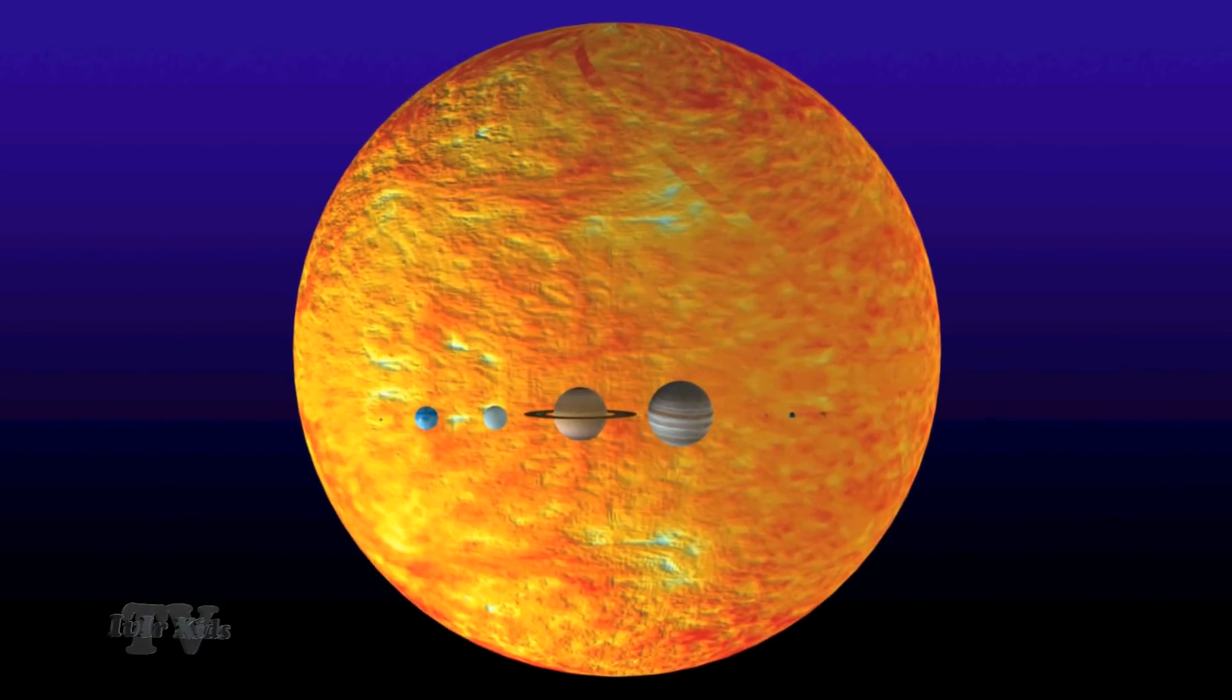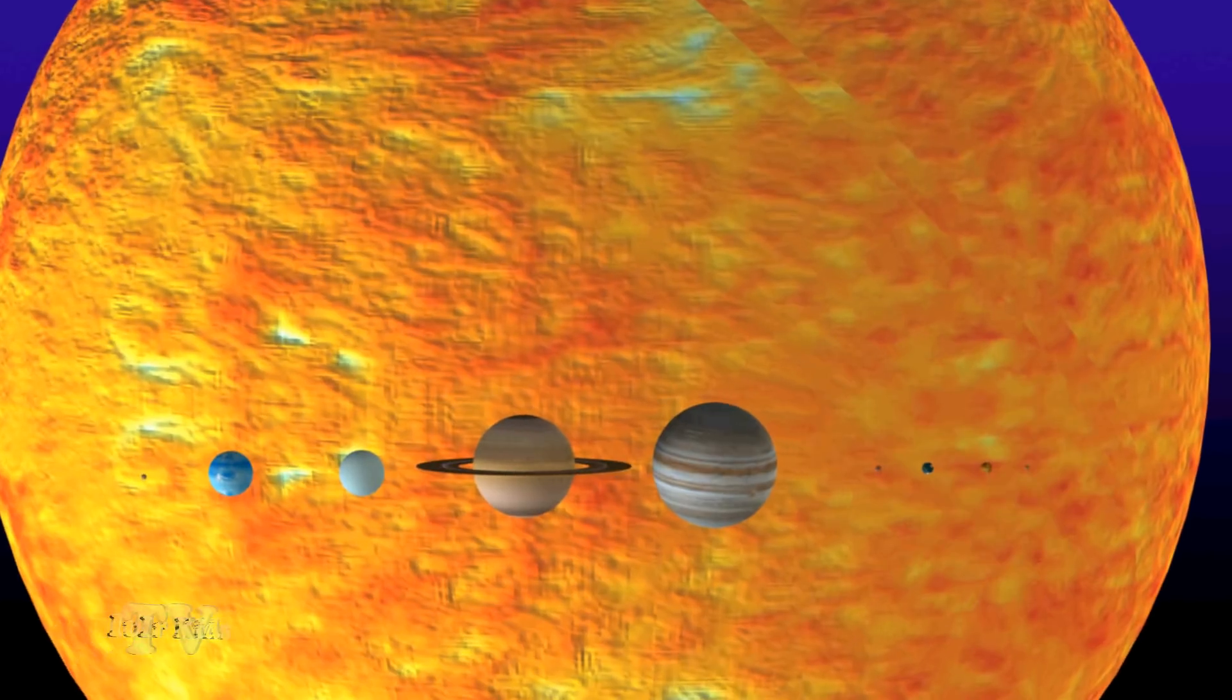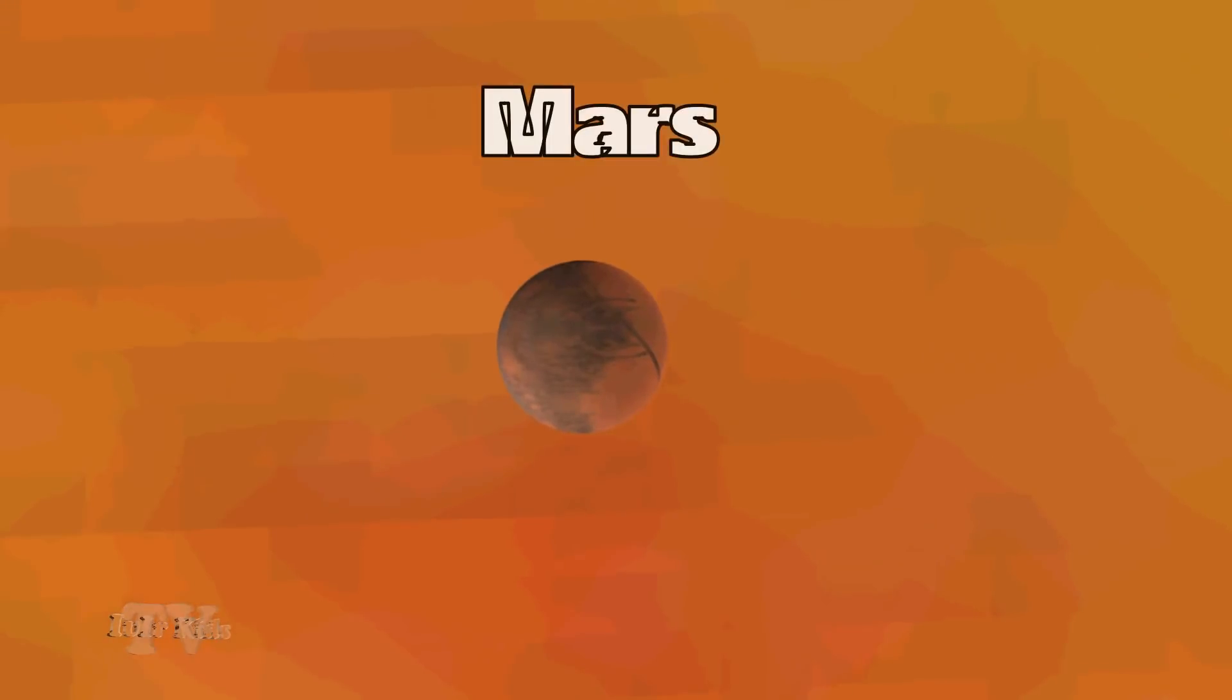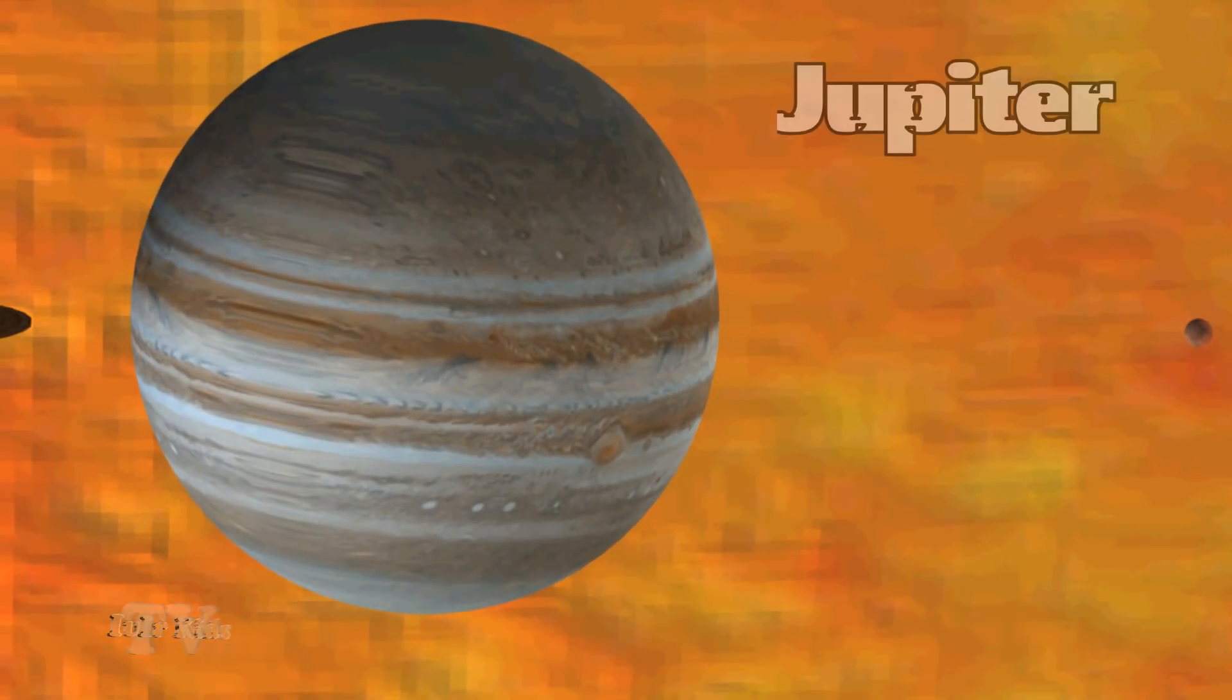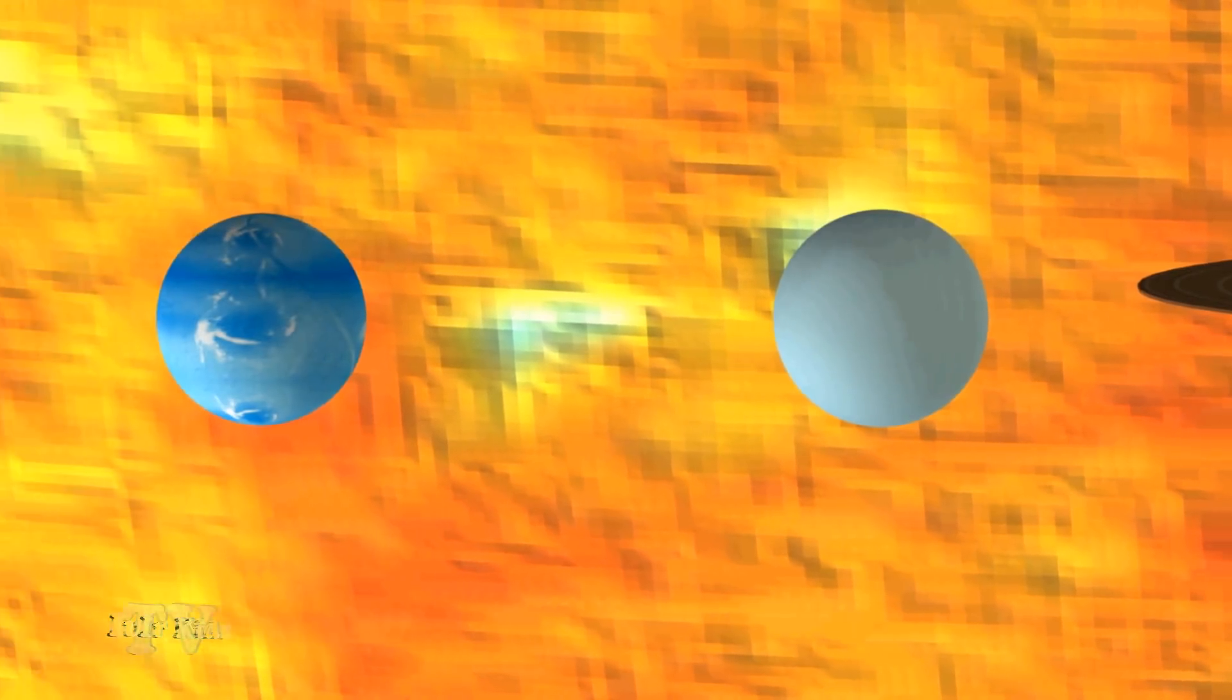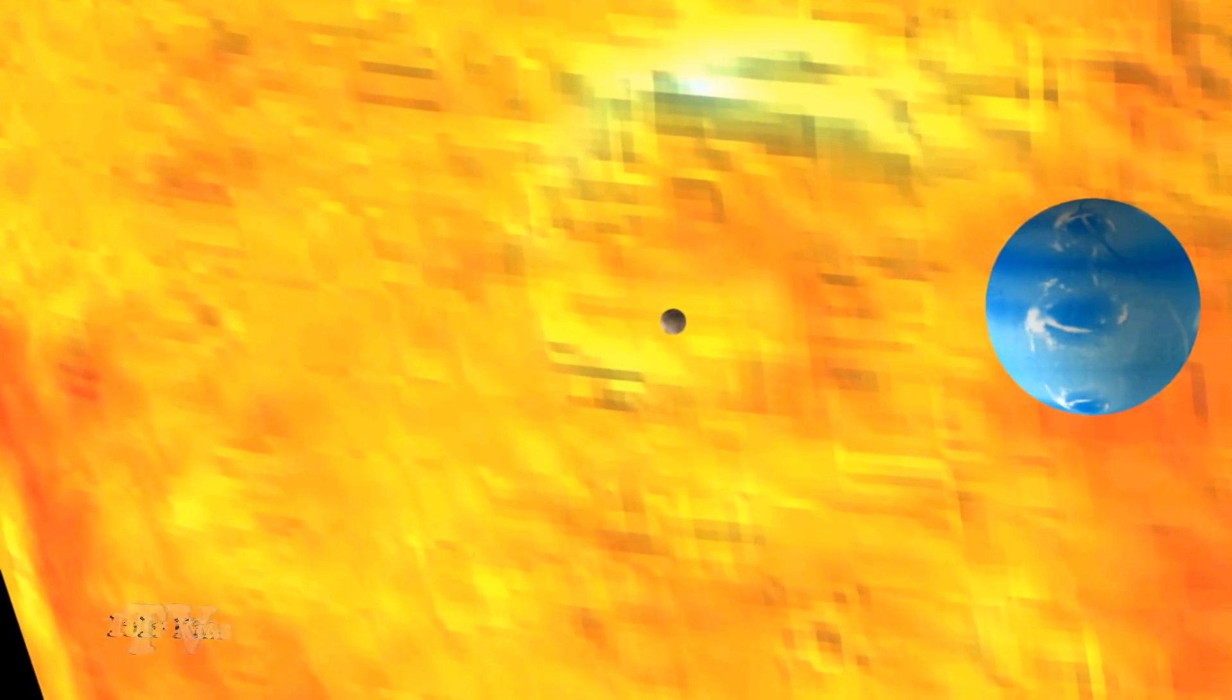The solar system includes planets. Planets have their physical characteristics, for example size, chemical composition, and density. These planets are Mercury, Venus, Earth, Mars, Jupiter, Saturn, Uranus, and Neptune. Also, let's mention the dwarf planet Pluto.